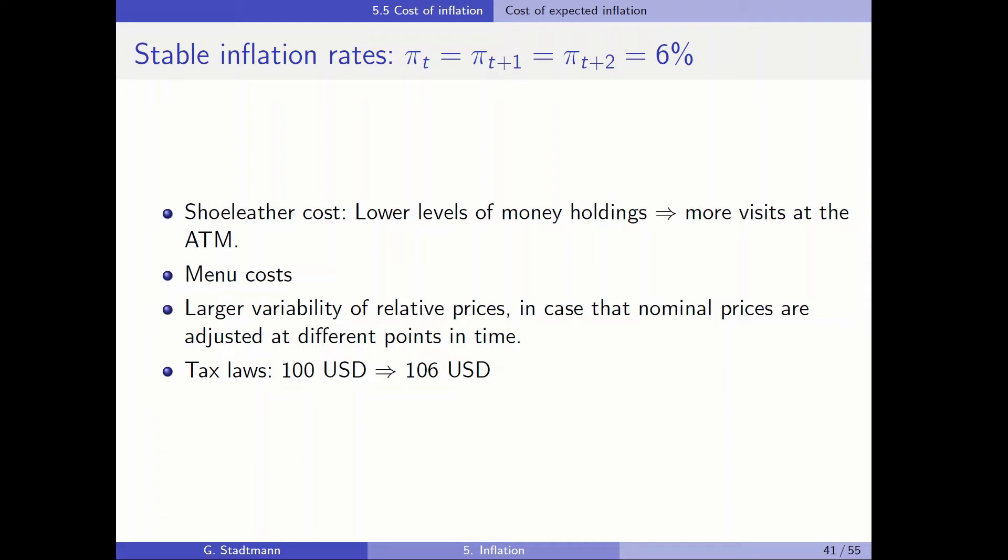But what are the costs of a stable inflation rate? Here we have talked about shoe leather costs. In case that the inflation rate is higher, also the nominal interest rate is higher, therefore the holdings of money will be lower. When the inflation rate is high, lower levels of money holdings. And therefore it is the case that a private agent has to visit the bank and the ATM more often, so that in the end the shoes deteriorate more often.